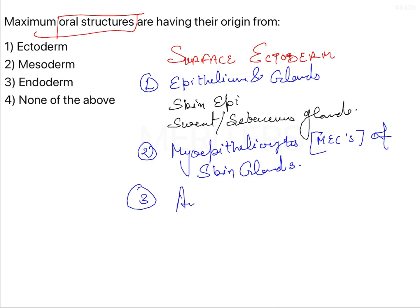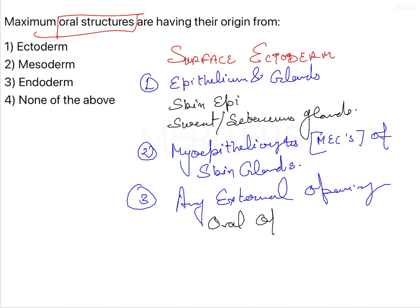When I say any external opening of the oral cavity — the first thing is of course your oral opening, and the second thing can be your Rathke's pouch, which is going to form the opening of most of your pituitary.